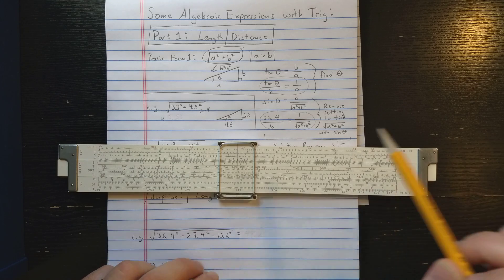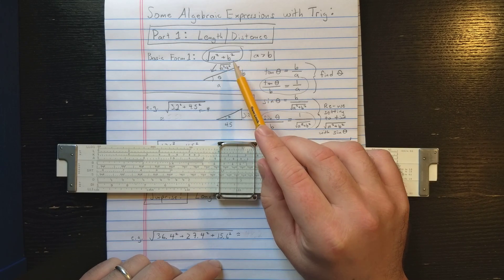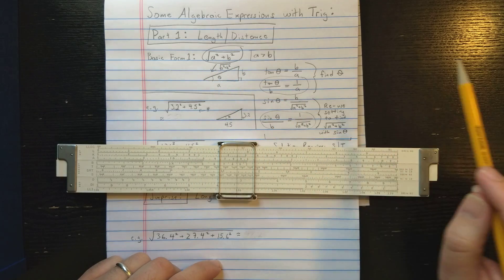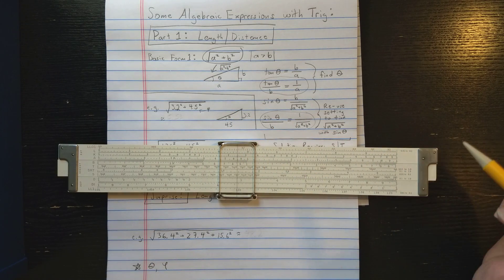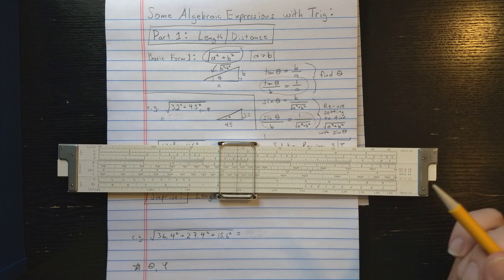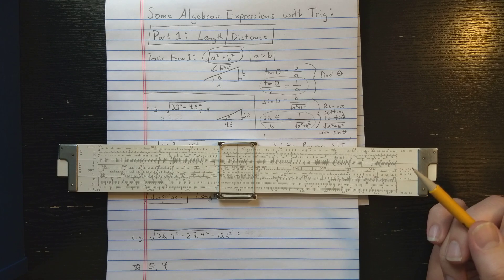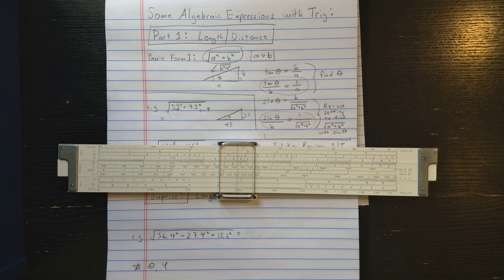The first video is going to focus on this form, which is the square root of a squared plus b squared. This could be useful for finding the length of a vector in two dimensions or for finding distance between two points in two dimensions. At the end, I'll extend this to three dimensions, so we'll do this in higher dimension also.